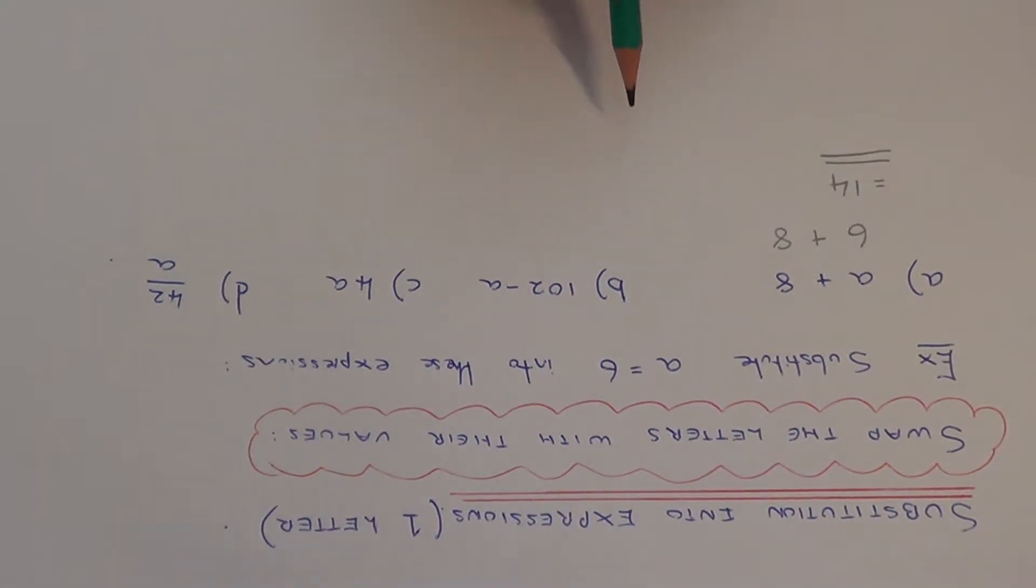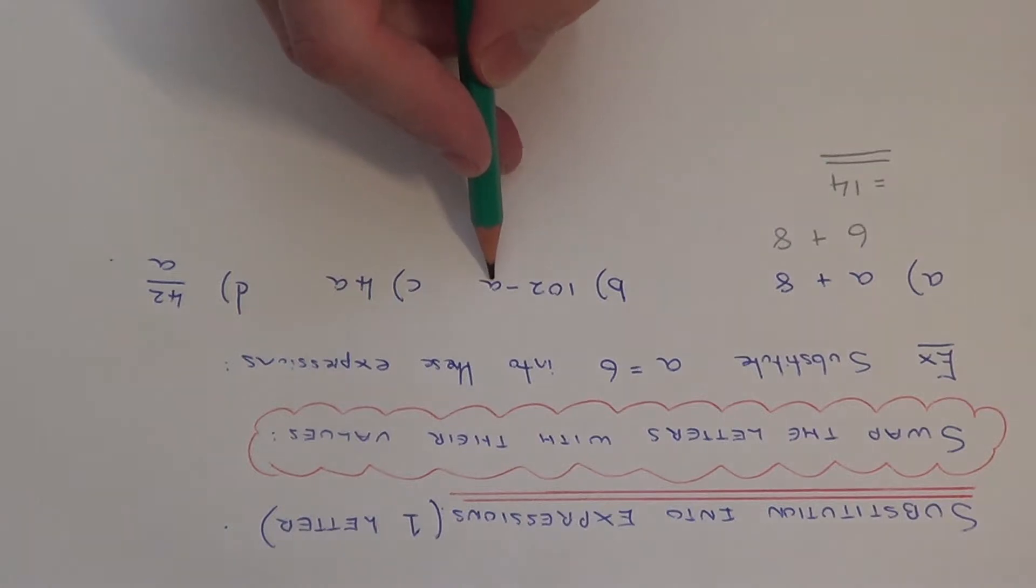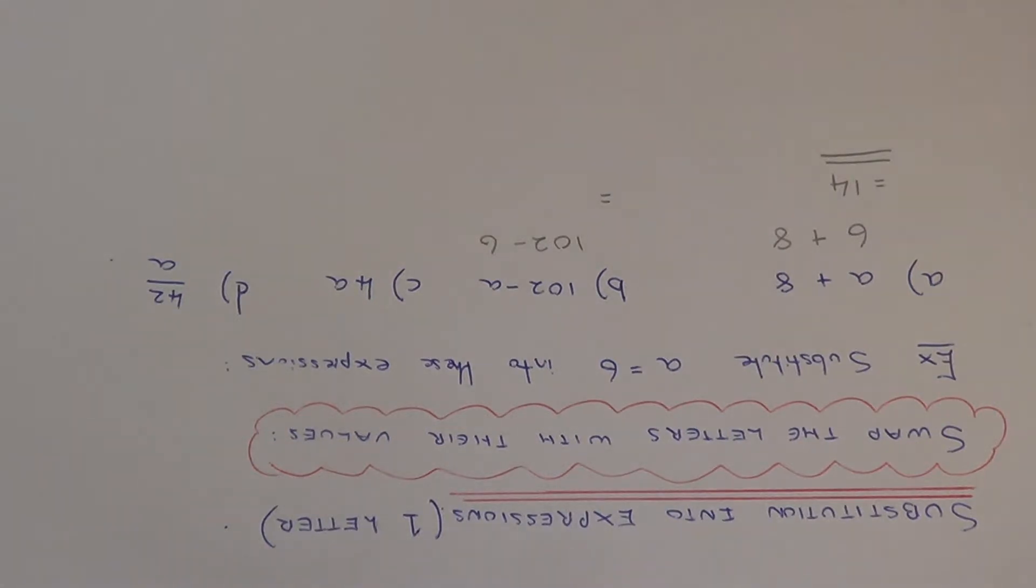Let's move on to part b. This time we have the expression 102 take away a. Again, change the a to its value, which is 6. So on our next line, write 102 take away 6, and 102 take away 6 is 96.